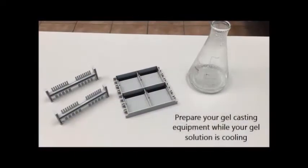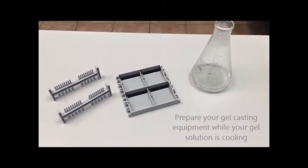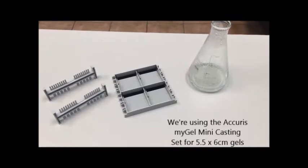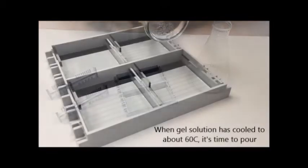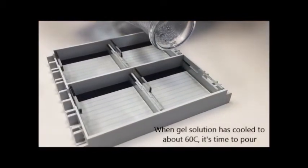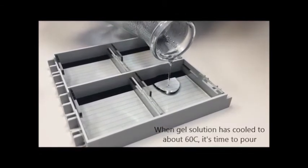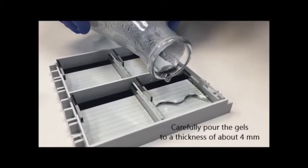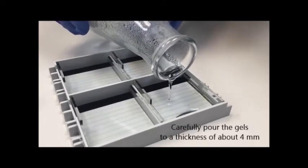The next step is to prepare your gel casting equipment. We're using the Acuras MiGel casting set that comes with the MiGel system. It's important to let your gel solution cool to about 60 degrees before pouring, otherwise you can warp the gel trays. Carefully pour the gels to a thickness of about 4 mm.